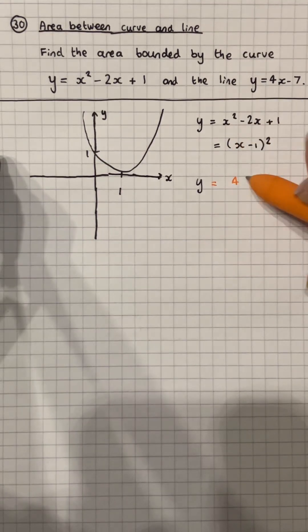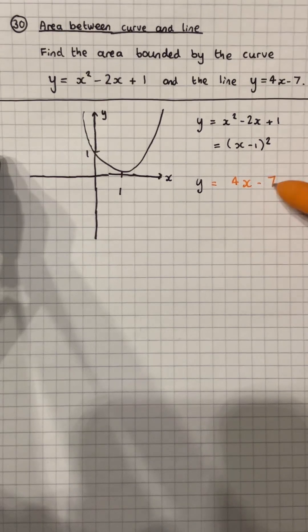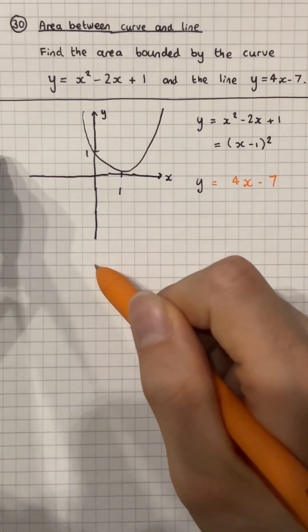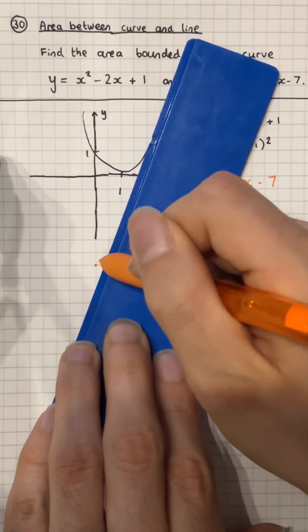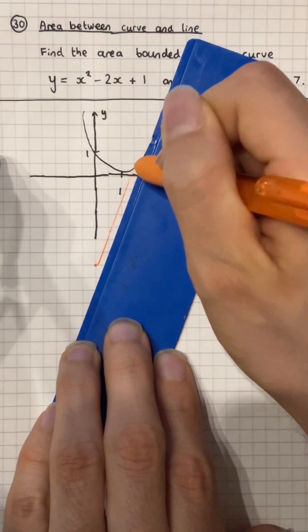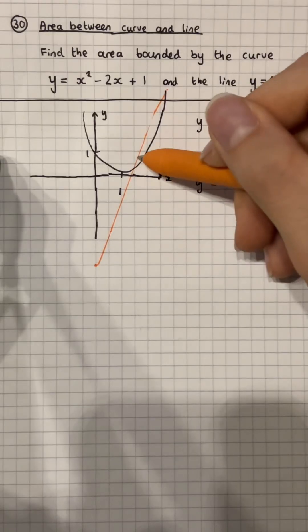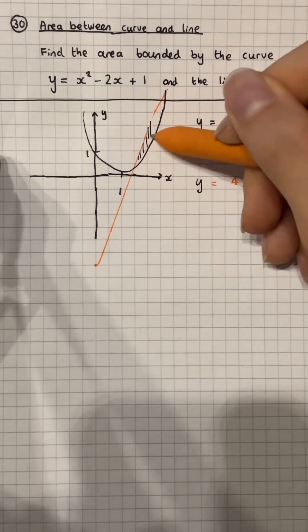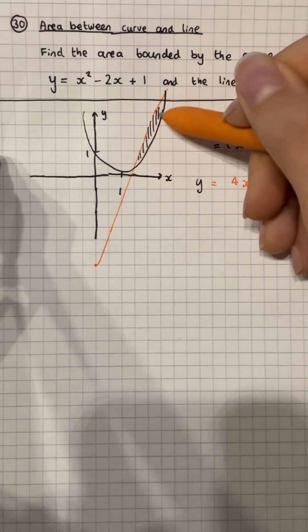If we draw the line 4x minus 7, we know it's going to start at minus 7 and it's going to be a straight line, quite steep. And if we shade this in, this is the area we're looking for.